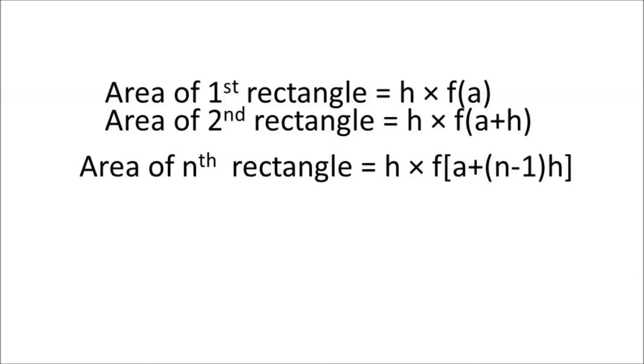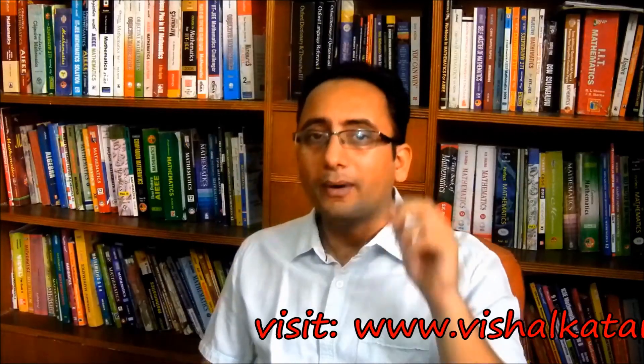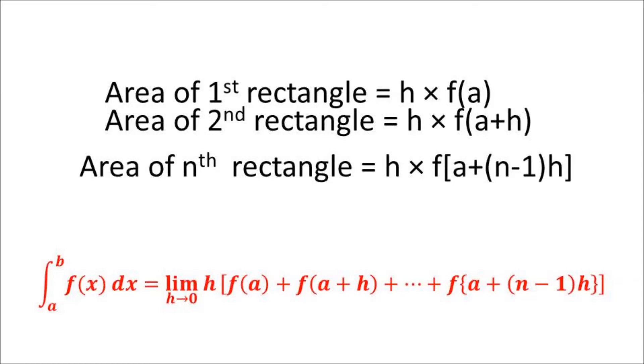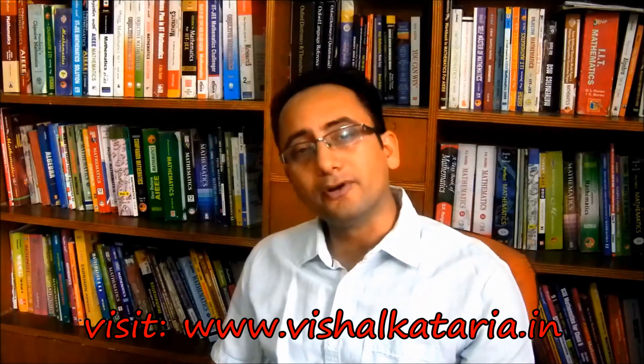So we have the areas of all rectangles: the first is h × f(a), the second is h × f(a + h), the third is h × f(a + 2h), and the nth is h × f(a + (n−1)h). The sum of all these areas gives the area under the curve. Hence, the definite integral from a to b of f(x) dx equals the limit as h→0 of h times [f(a) + f(a+h) + f(a+2h) + … + f(a+(n−1)h)], because the sum of rectangle areas equals the area under the curve if and only if the width h approaches 0, or equivalently, the number of rectangles approaches infinity.